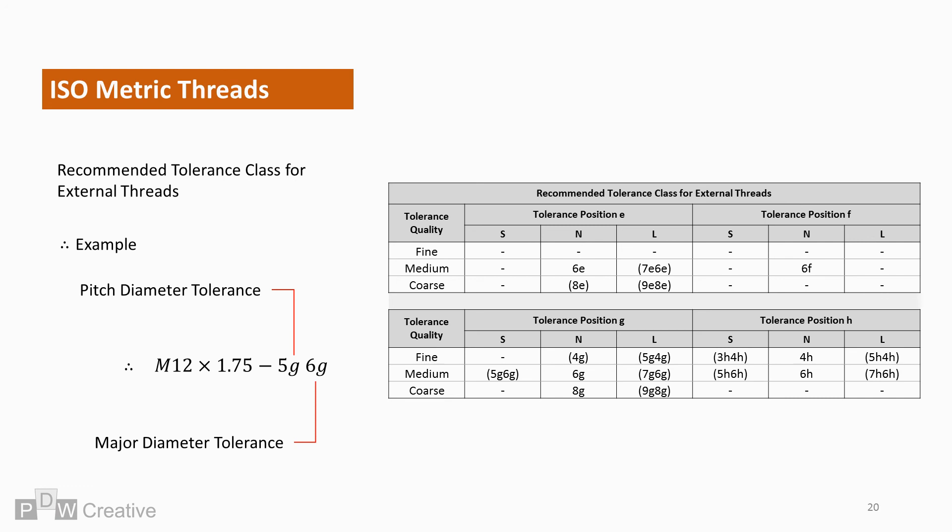The external thread description tolerance is for the pitch and major diameters. Tolerance positions E, F, G and H are preferred for external threads. Any combination shown in the tables here with only one letter and number offer the same class for both diameters.